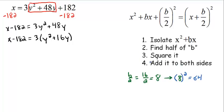Now we need to add that to both sides. Let's rewrite: x - 182 = 3(y² + 16y + 64).